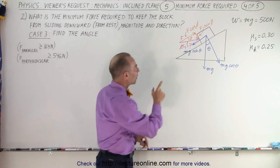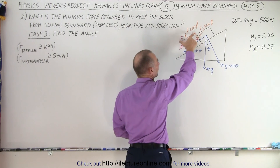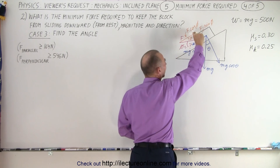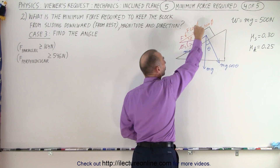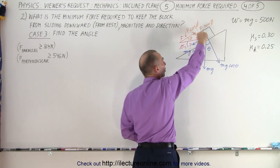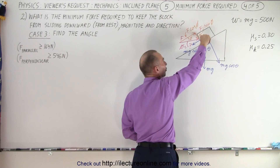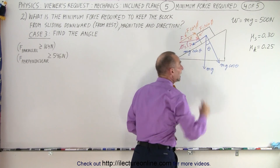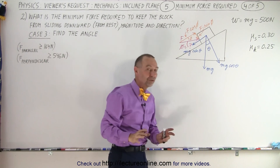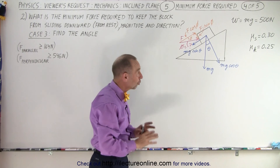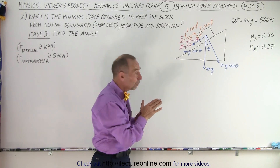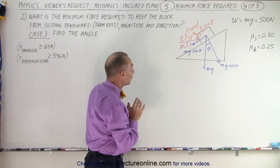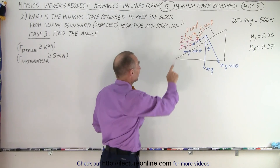That means we have two components of that force: one component which helps push the block upward, and the other component which adds additional weight, so to speak, on the block pushing down against the incline, increasing the friction force. So it could be that at some angle we'd require even less force, and we're going to find what that angle is.